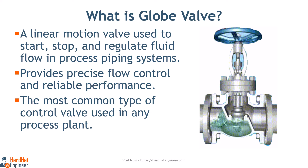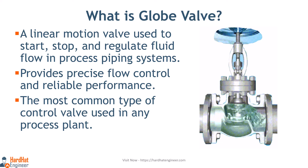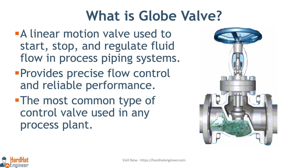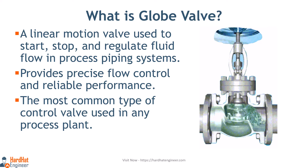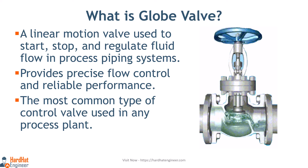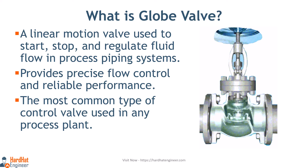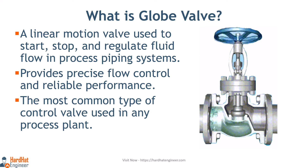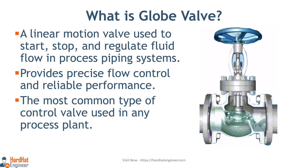What is a globe valve? A globe valve is a linear motion valve used to start, stop, and regulate fluid flow in process piping systems. It is a control valve that provides precise flow control and reliable performance. During opening and closing, the disc moves perpendicularly to the seat. This movement creates an annular space between the disc and seat ring that gradually closes as the valve closes.